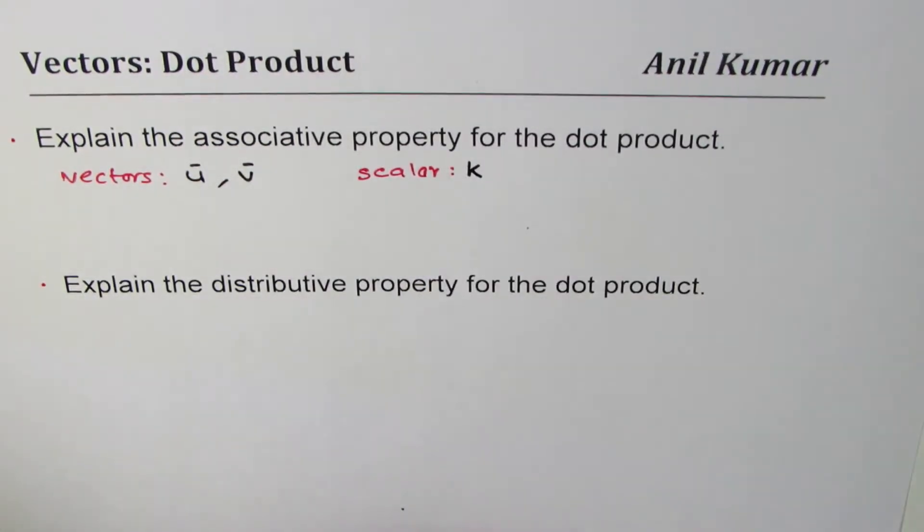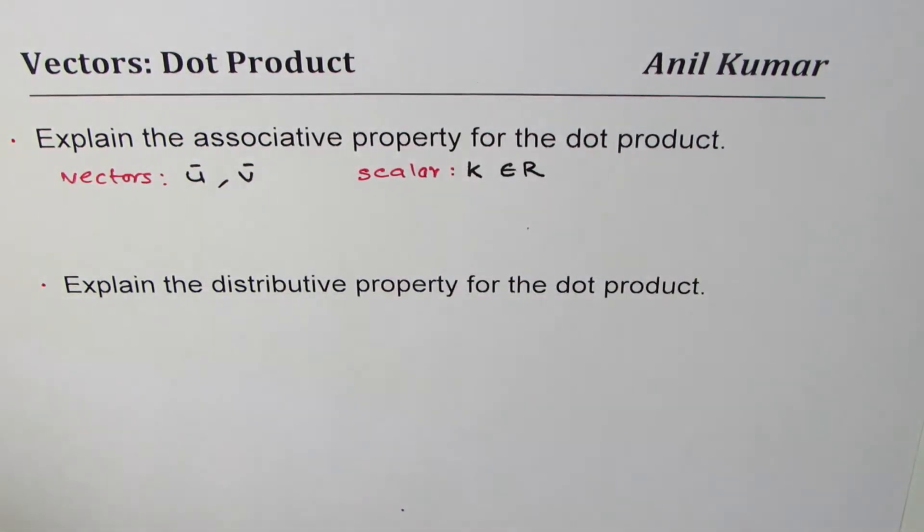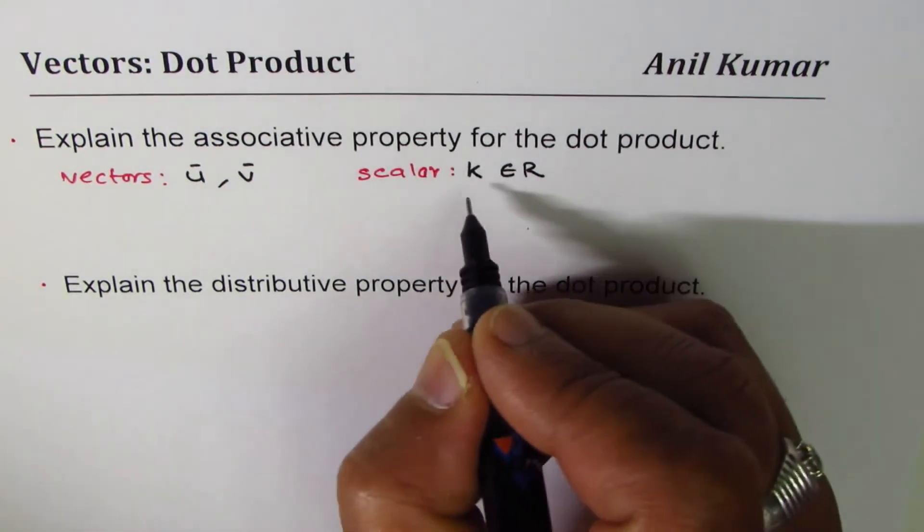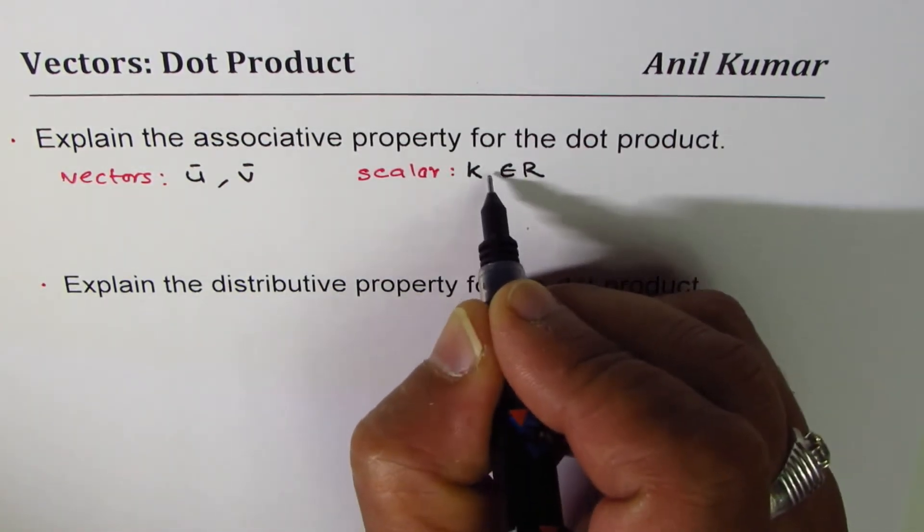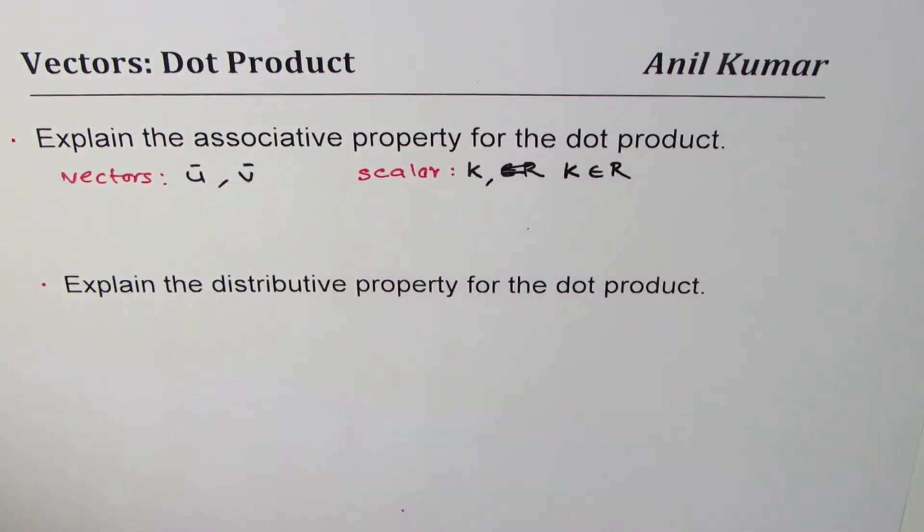So these are the things which interact and then we can have associative property of vectors. Now this k belongs to set of real numbers - where k belongs to... I should have written where k belongs to ℝ. That's clear. So scalar - any number which belongs to set of real numbers, that is what it is.